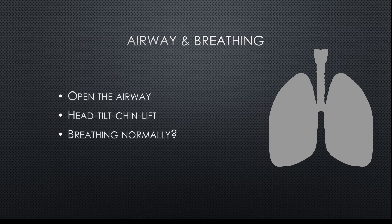Now that we've assessed they are unresponsive, we need to assess whether they're breathing — but first you must open the airway. Place one hand on the patient's forehead and two fingers under the patient's chin from the other hand, and tilt the head back about one to two inches. This is known as a head tilt chin lift. Then look, listen, and feel for breathing — place your ear about one to two inches above the patient's mouth and nose, looking at the chest for air movement. If the patient is not breathing normally, we fulfill the second criterion and can proceed.